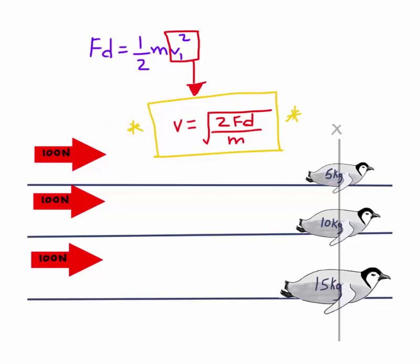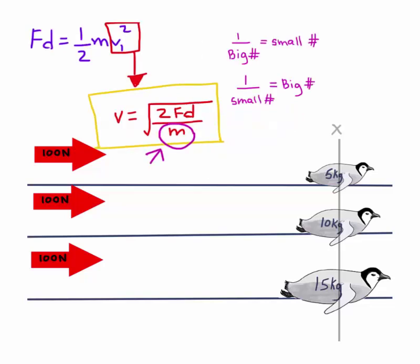We can see mass is in the denominator. This means mass would be a big factor in determining speed. This is because when we have a big number in the denominator, we get a small number back.